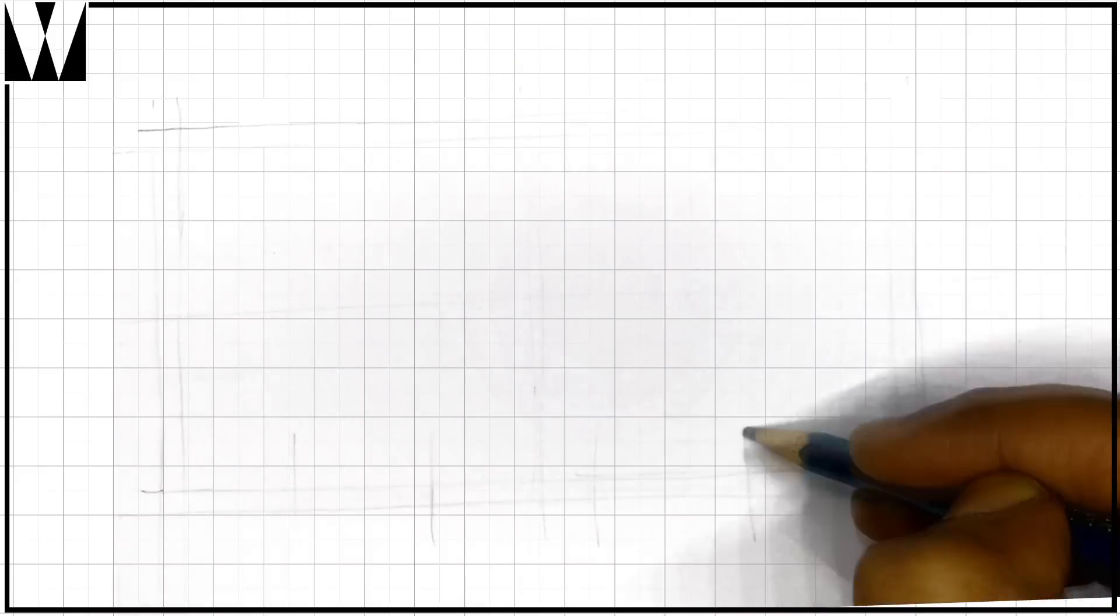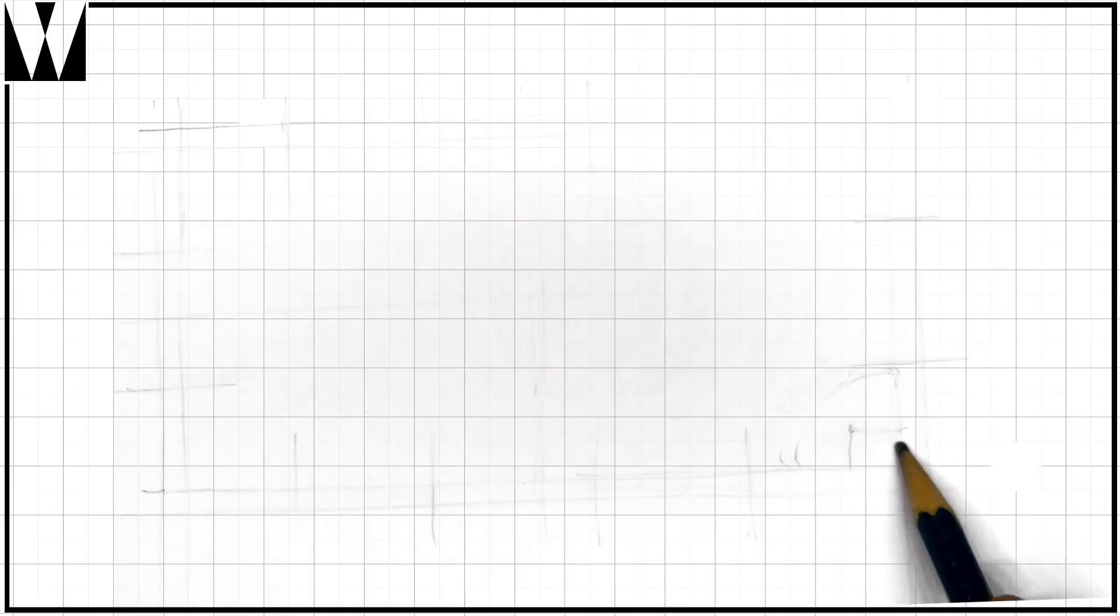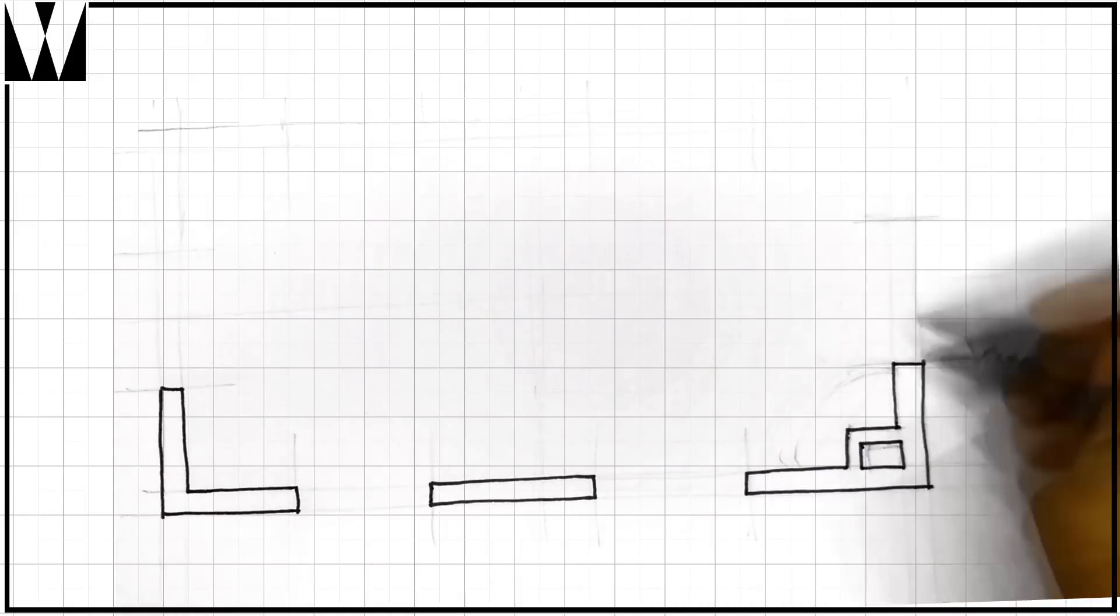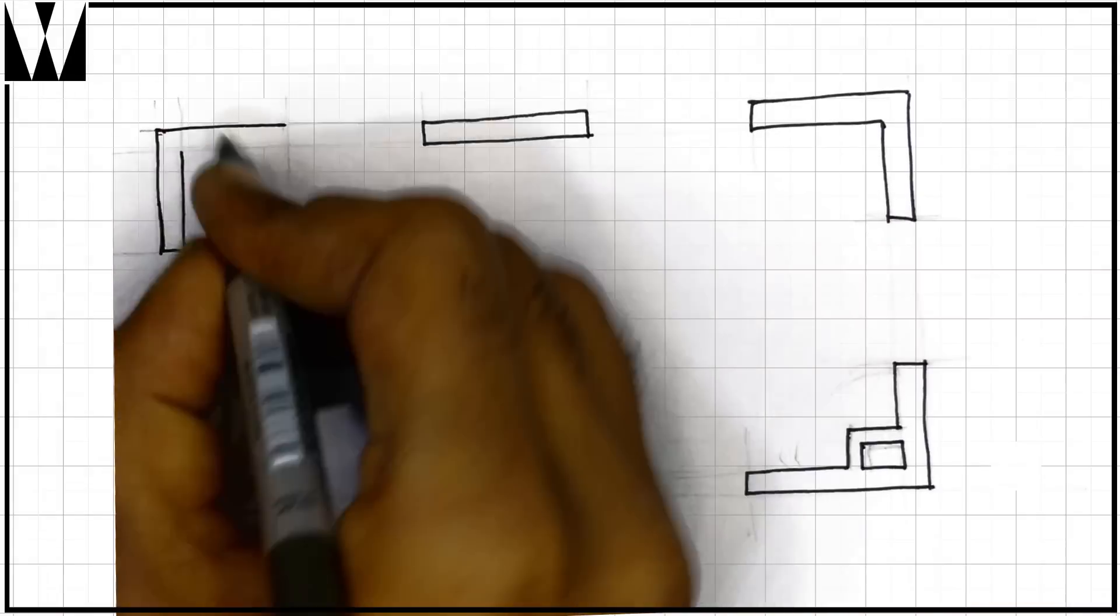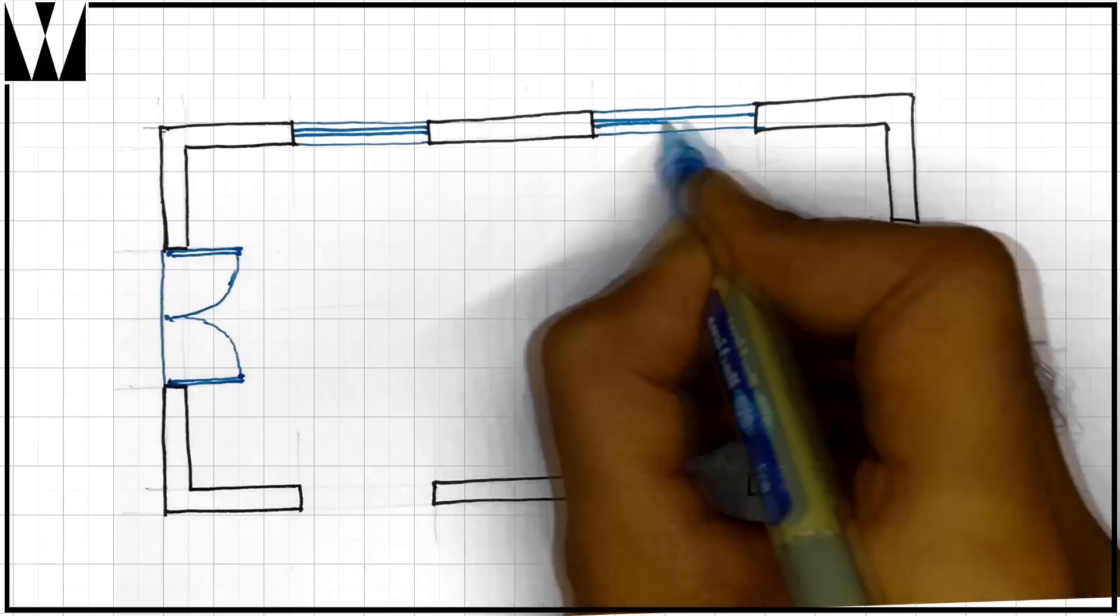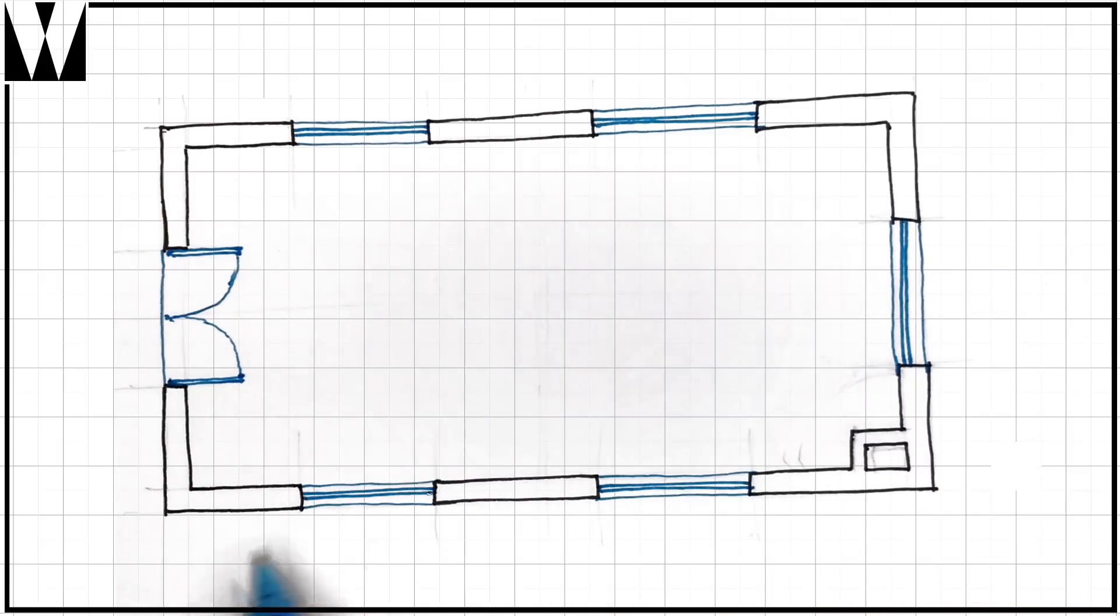Similar to the section, we draw thick lines to show what has been cut, the walls especially. We leave openings for the doors and windows. And then draw them in, with the swing of the door, so you know how the door opens. The windows too.